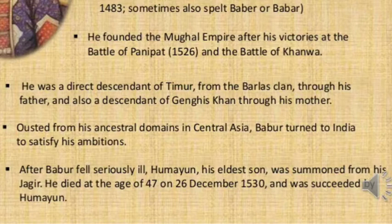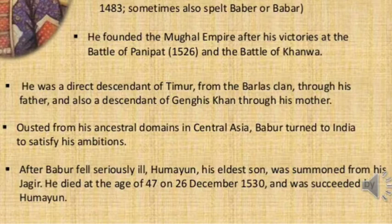Babar already had his empire in Central Asia but he turned to India to satisfy his ambitions. After Babar fell seriously ill, his eldest son Humayun was summoned from his Jagir. Babar died at the age of 47 on 26th December 1530 and was succeeded by Humayun. This way Humayun, the eldest son of Babar, became the ruler of the Mughal Empire.